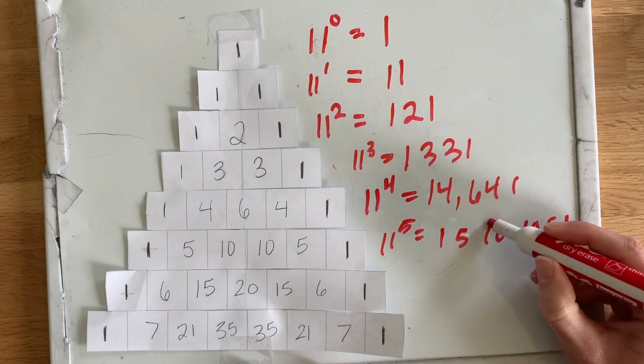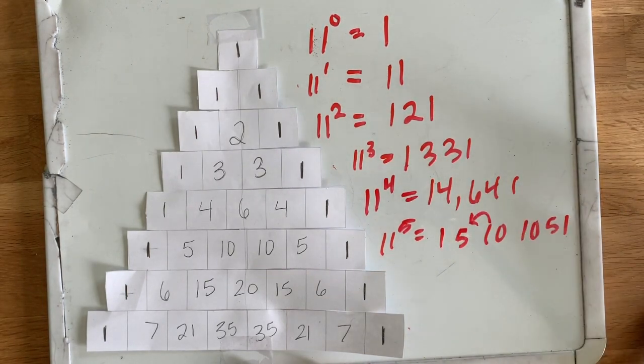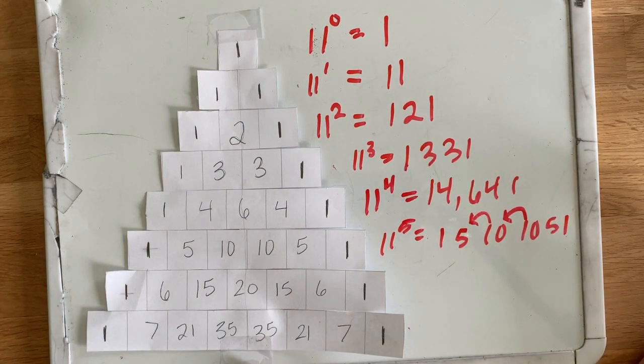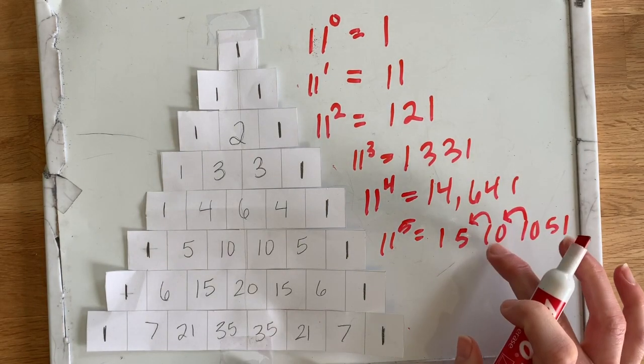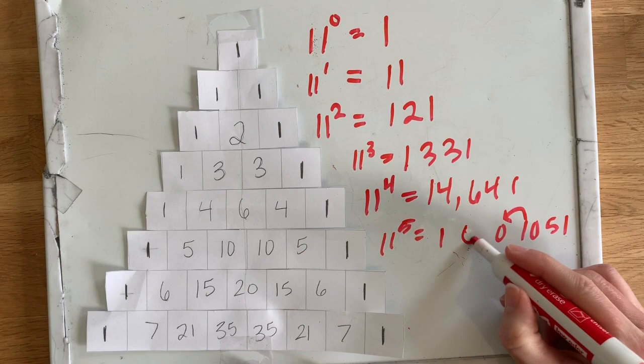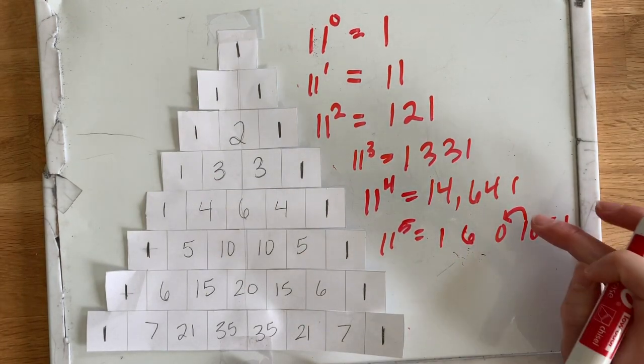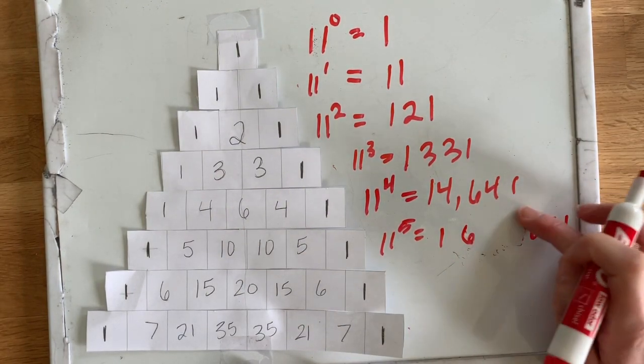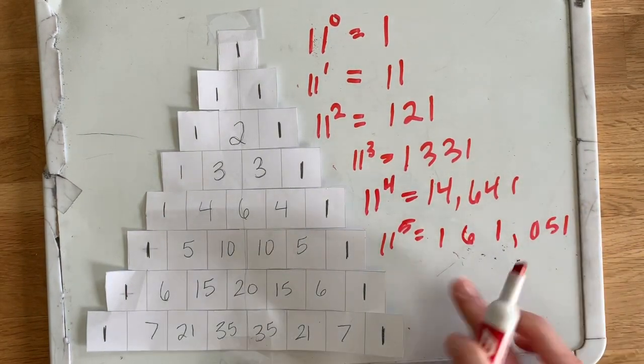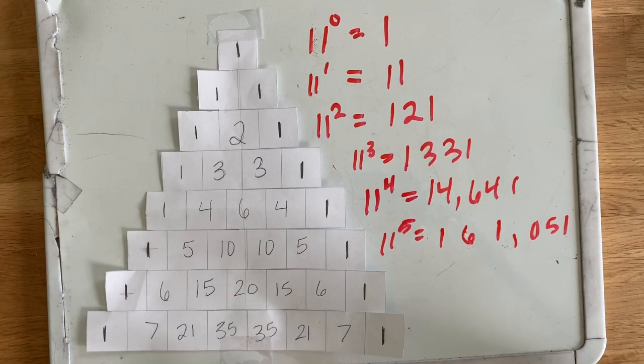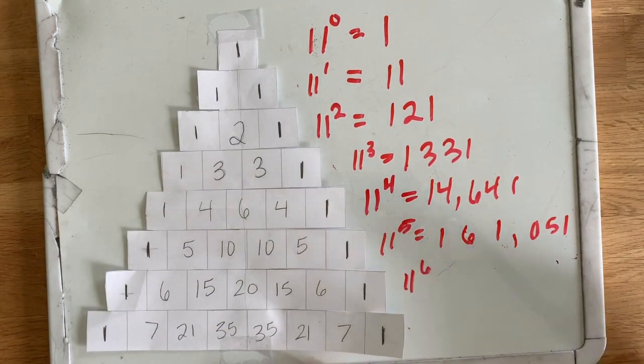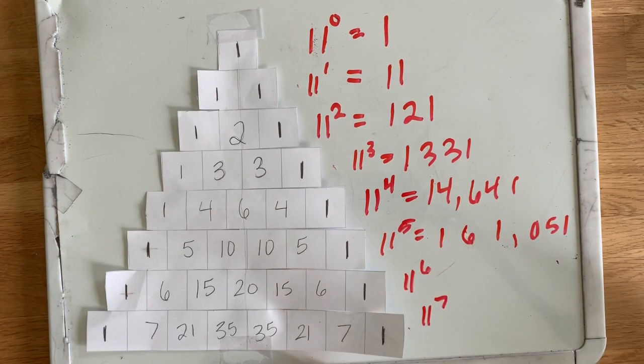We're actually just going to add this 1 over. So 1 plus 5 is 6, and 1 plus 0 is 1. And now we've found what 11 to the fifth power is. So I wonder if you can find out what 11 to the sixth power is and 11 to the seventh power is.